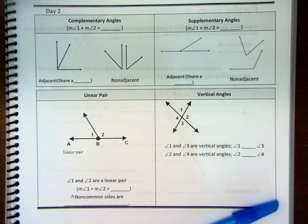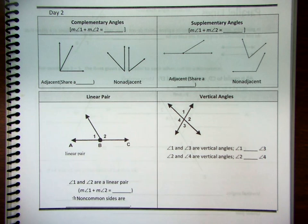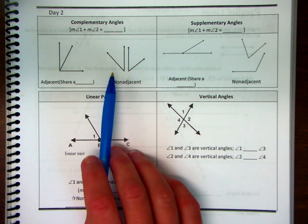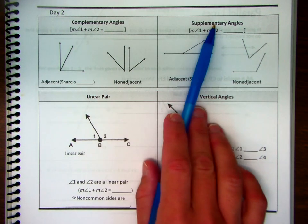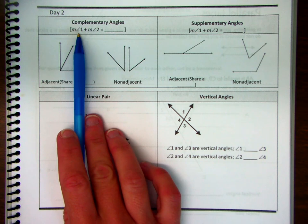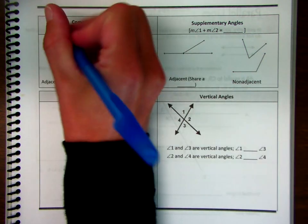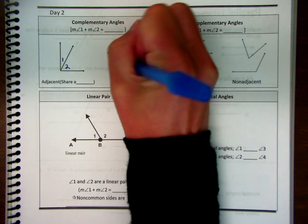Today is our day two notes, and we're going to start by taking a look at some angle pairs. Within this first row, we have complementary angles and supplementary angles. It talks about angles one and two for each, so let's add the one and two to our picture.